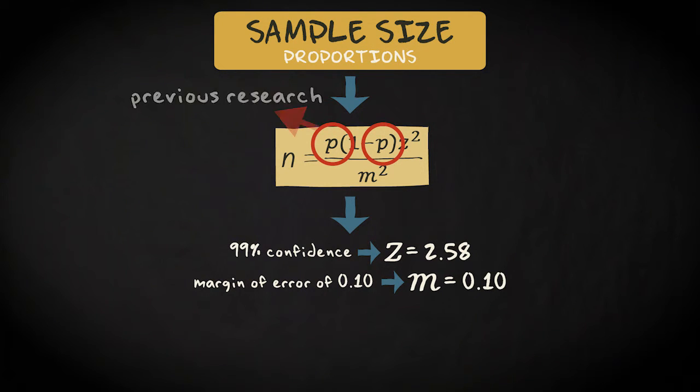Again, if you can make a guess based on previous research with the same variable, you can use this value of p coming from this previous study. If not, you should make an educated guess as I did before, or you could go for the so-called safe approach. And this is how you do that.